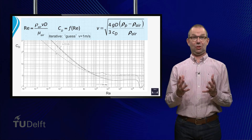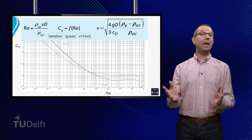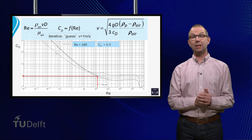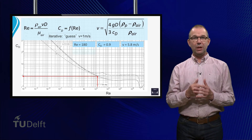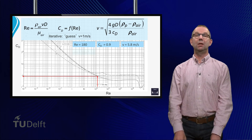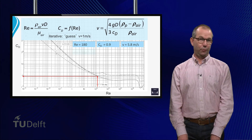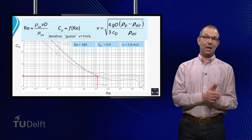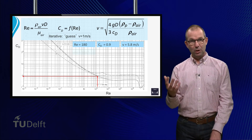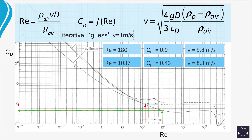This problem can be tackled with an iterative procedure using the CD graph. We take an initial guess to start the iteration — let's say V is 1 meter per second. From that we compute Reynolds equals 180. We use the graph and read the line for a sphere at Reynolds equals 180 and find CD is 0.9. Then we compute the next value for the velocity, which gives V equals 5.8 meters per second. From this we compute the next Reynolds number, which gives Reynolds equals 1037. Again we read the graph and find CD is now 0.43.